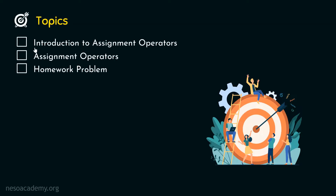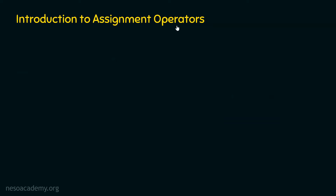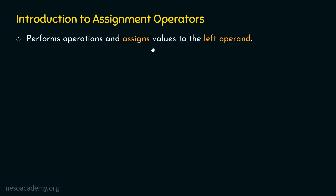Let's see the first topic: introduction to assignment operators. What is an assignment operator? An assignment operator is an operator which is capable of performing operations and assigning values to the left operand. Not only is it capable of assigning values to the left operand, but it is also capable of performing operations, because an assignment operator is a combination of the assign operator and other operators.